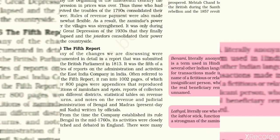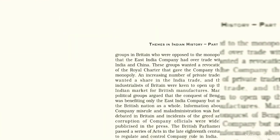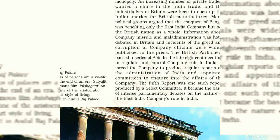The Fifth Report was submitted to the British Parliament in 1813. It was the fifth in a series of reports on the administration and activities of the British East India Company in India, which is why it is known as the Fifth Report or Firminger's Fifth Report. The report had more than 800 pages, with most pages being appendixes containing appeals and petitions of zamindars and raiyats. The purpose was to bring the East India Company's activities in Bengal under close watch and debate in England.